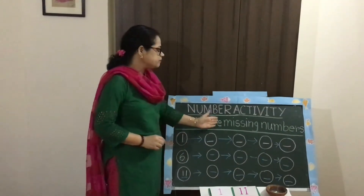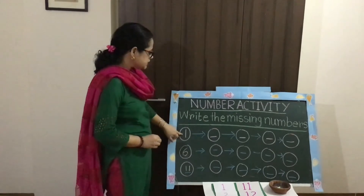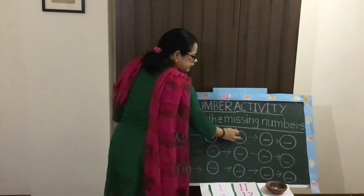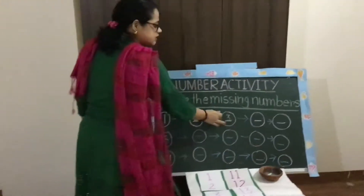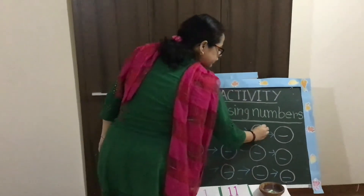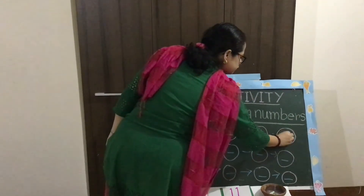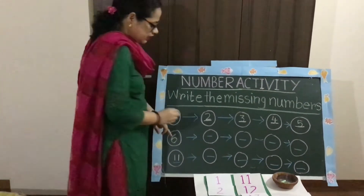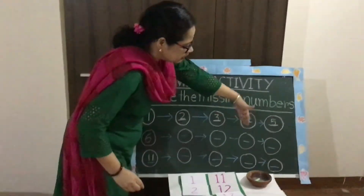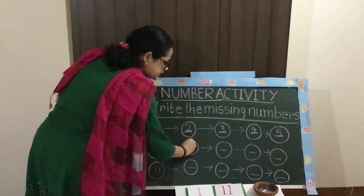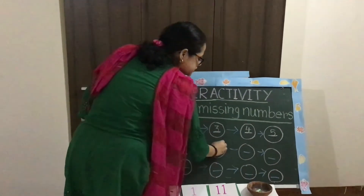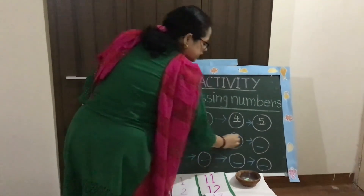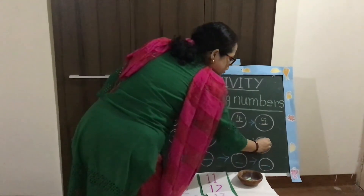Next activity is write the missing numbers. Look: 1. Next number of 1 is 2. Next number of 2 is 3. Next number of 3 is 4. Next number of 4 is 5. Number 6. Next number — now you will write the missing numbers. Next number of 6 is 7. Next number of 7 is 8. Next number of 8 is 9. And next number of 9 is 1-0, 10.